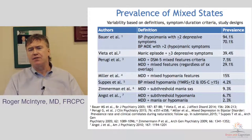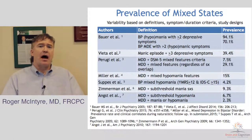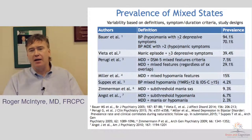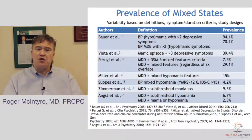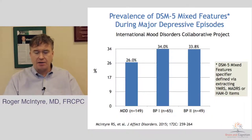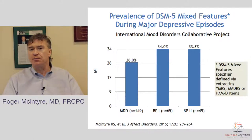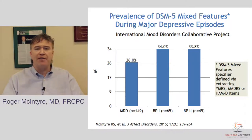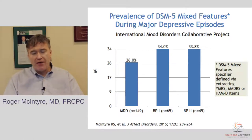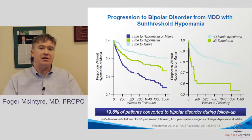The rates of mixed features vary widely. In some ways it's like how long is a piece of string — it depends on how you define it and on the study. It's ranged from 10% to as high as 94% in descriptions of the prevalence of mixed states. More recently, our group in Toronto with colleagues at Cleveland Clinic looked at the prevalence of mixed features in both major depression and bipolar disorder according to DSM-5 criteria, finding about 25% of people with major depression and 30-35% of people with bipolar disorder have mixed features — very common indeed.